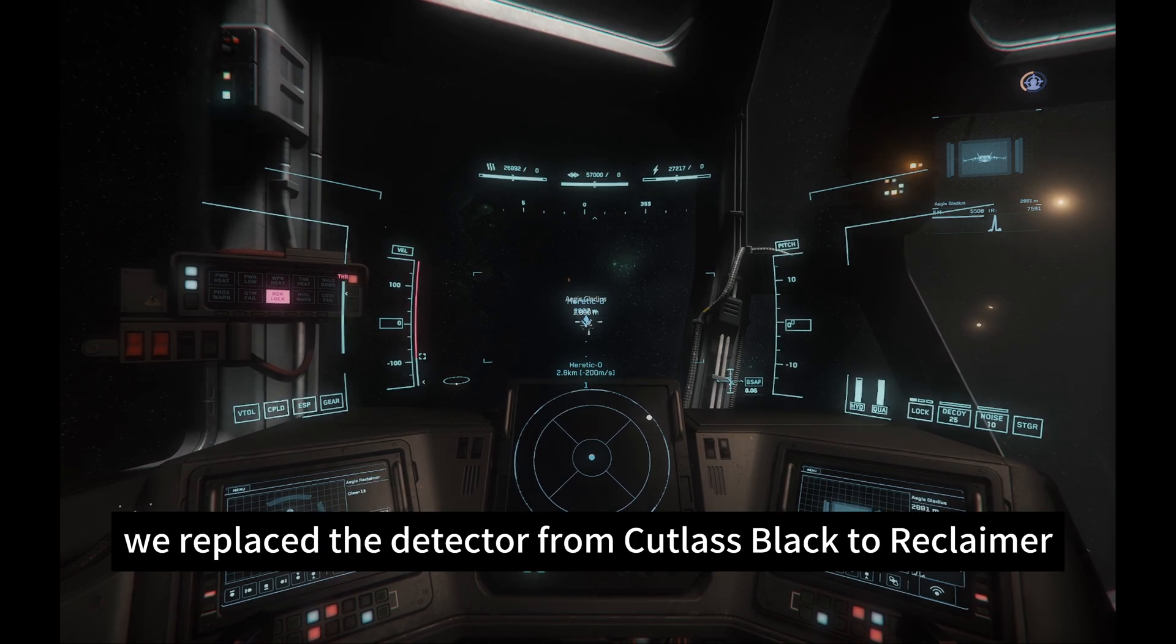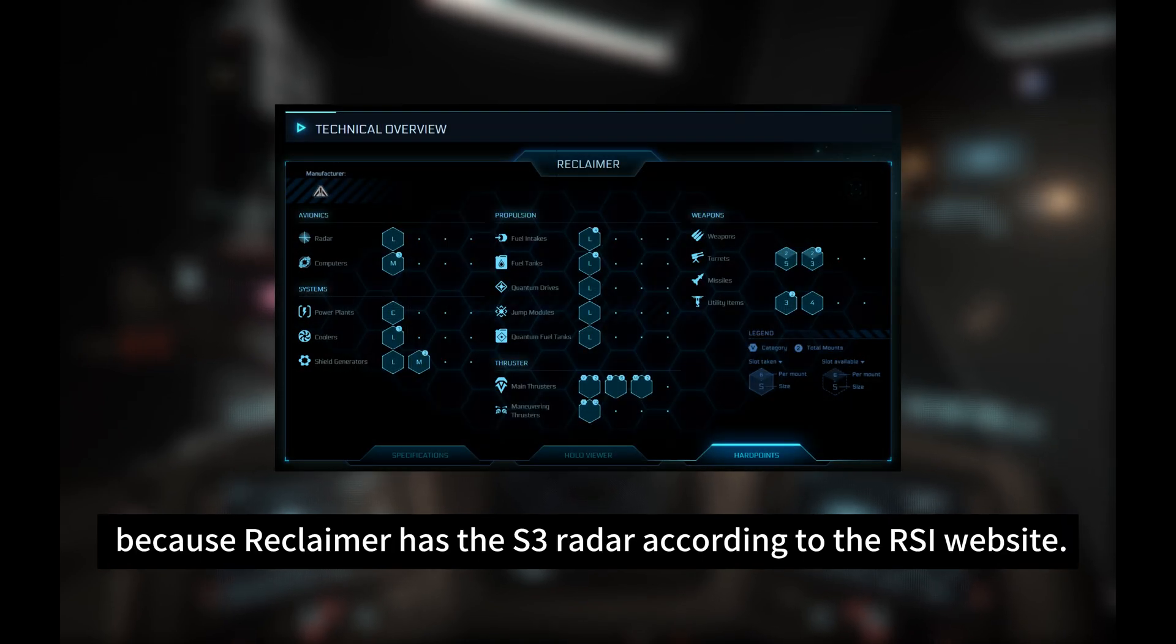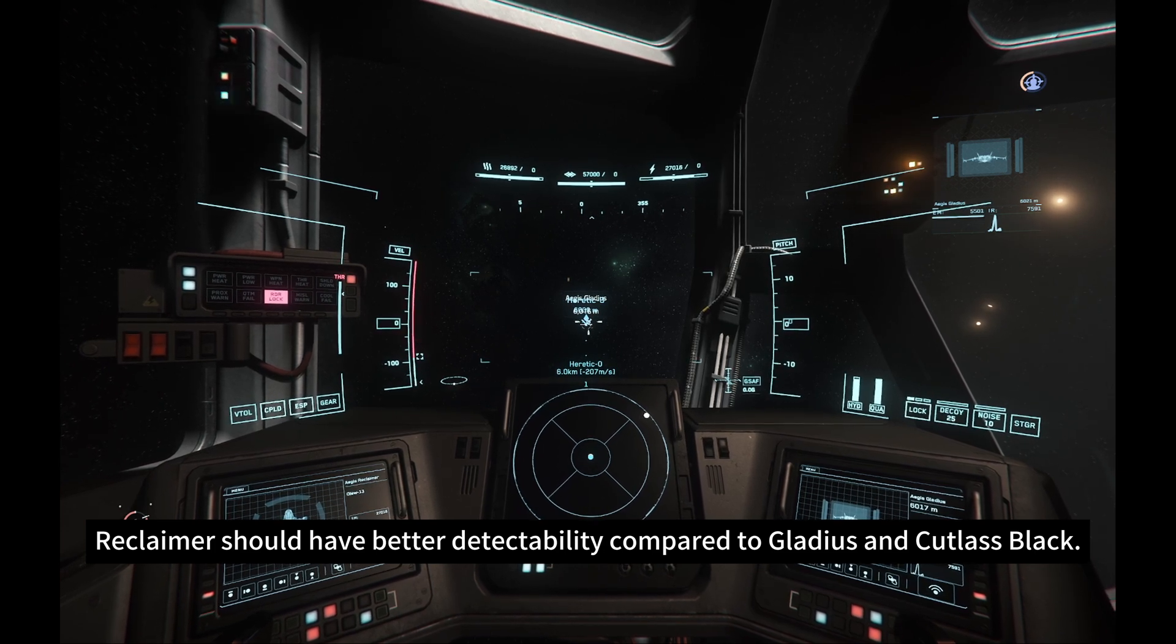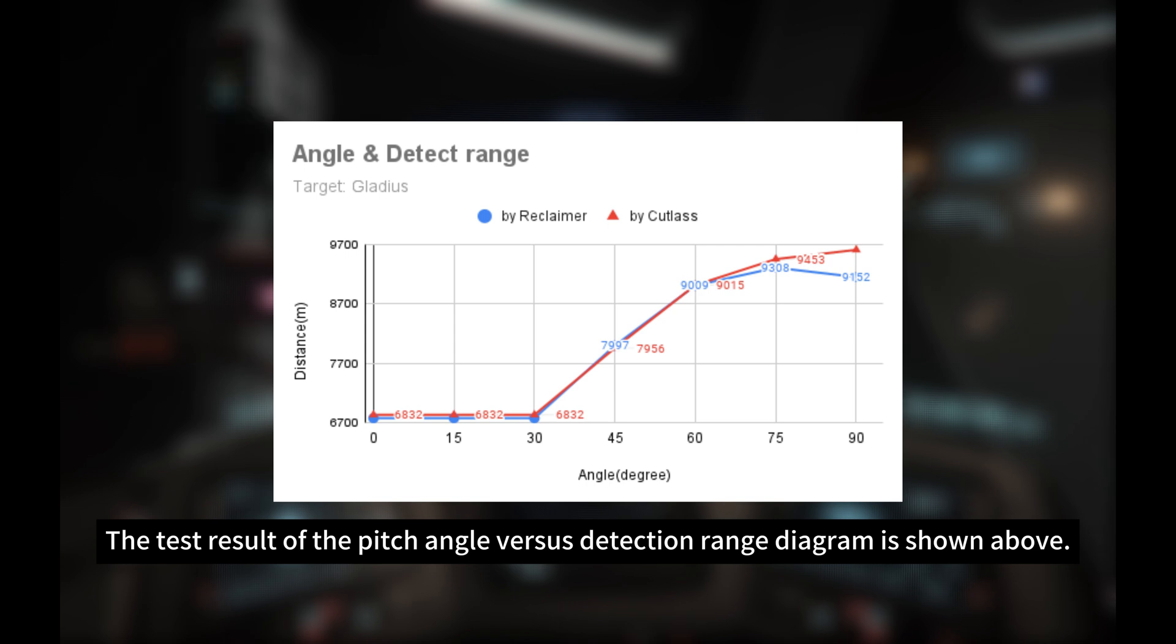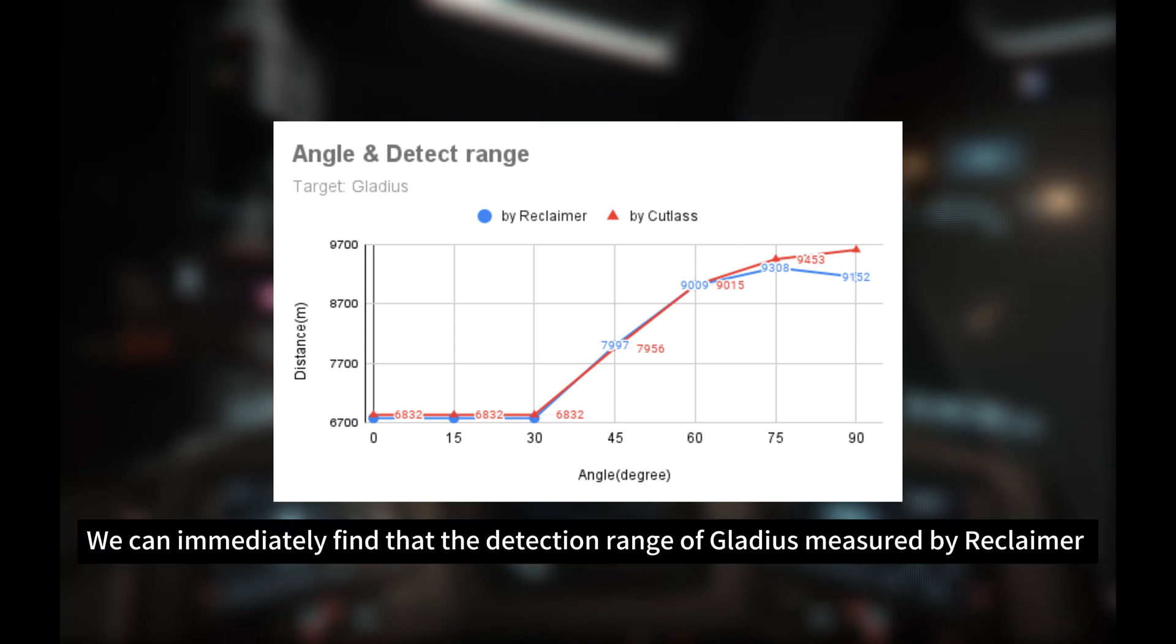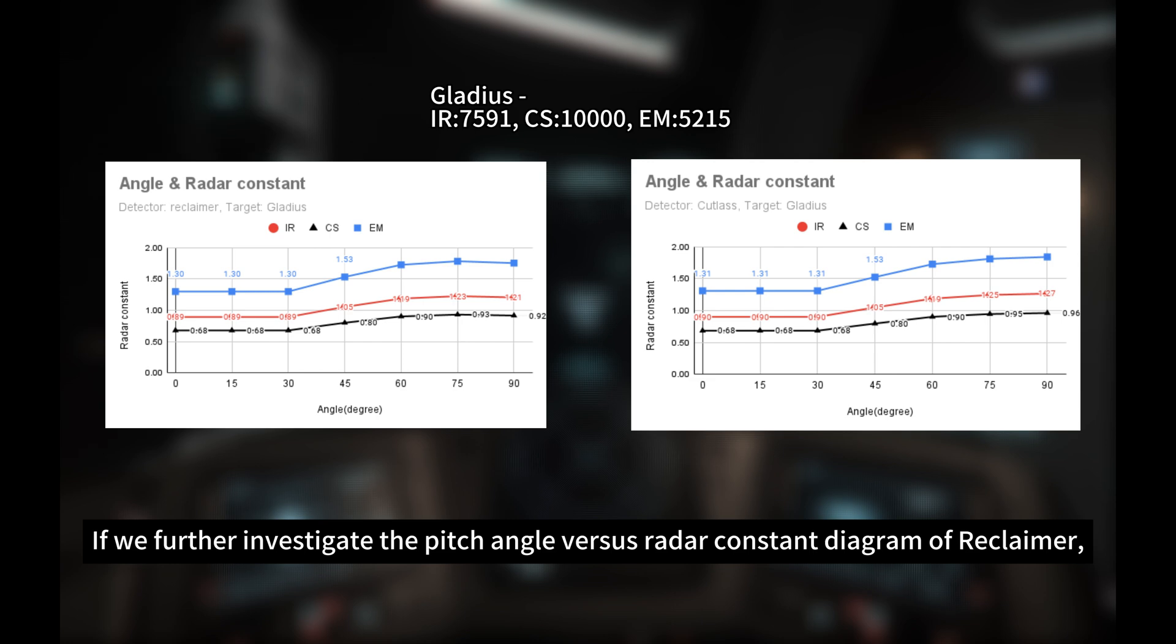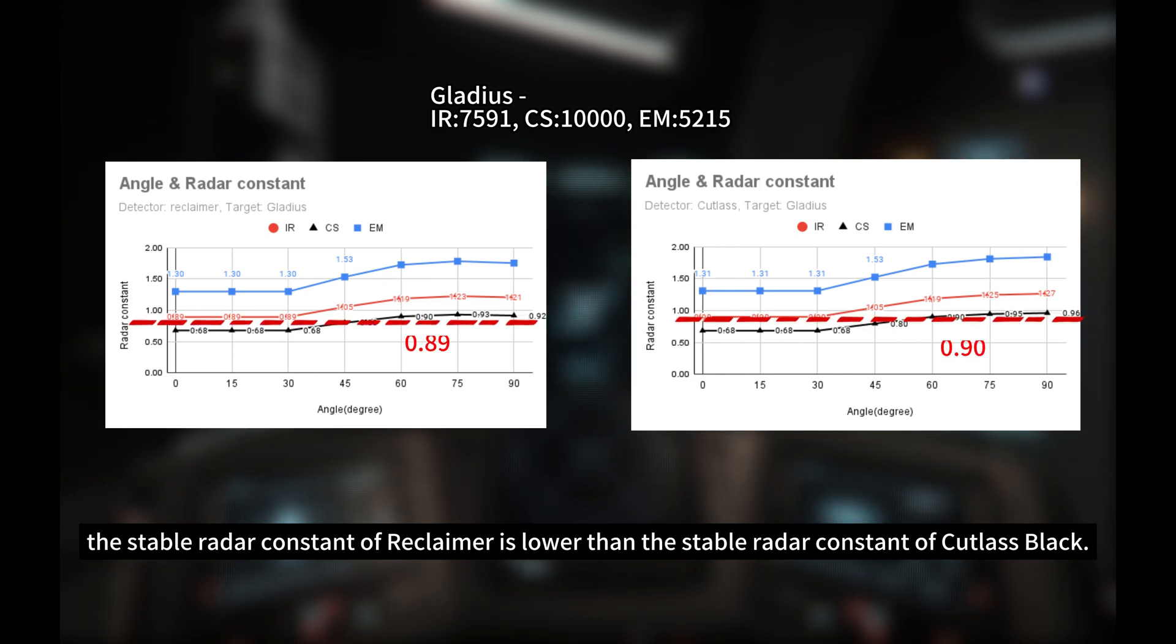Same as experiment 2, we replace the detector from Cutlass Black to Reclaimer, because Reclaimer has the S3 radar according to the RSI website. In theory, Reclaimer should have better detectability compared to Gladius and Cutlass Black. The test result of the pitch angle versus detection range diagram is shown above. We can immediately find that the detection range of Gladius measured by Reclaimer is almost same as the detection range of Gladius measured by Cutlass. If we further investigate the pitch angle versus radar constant diagram of the Reclaimer, we can also find that although Reclaimer's curve is similar to Cutlass Black, the stable radar constant of Reclaimer is lower than the stable radar constant of Cutlass Black.